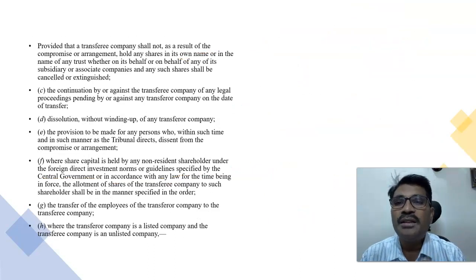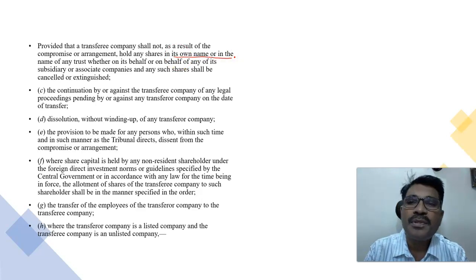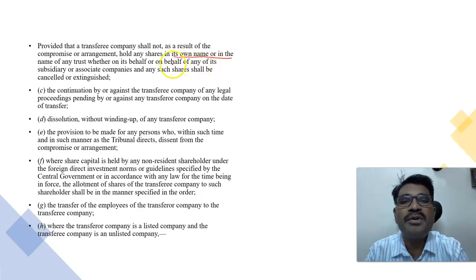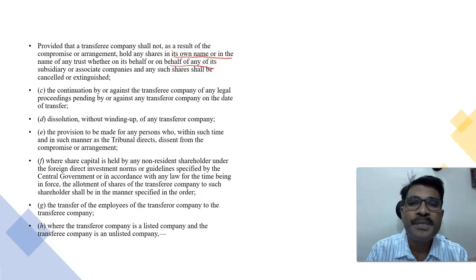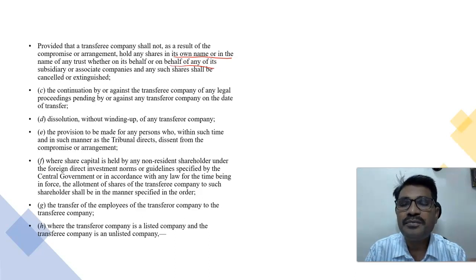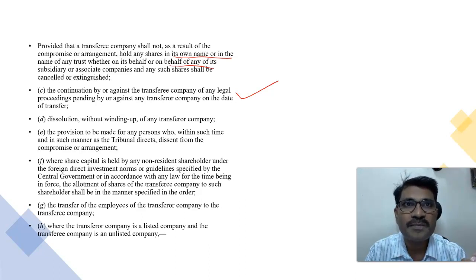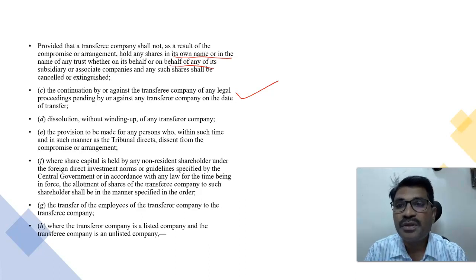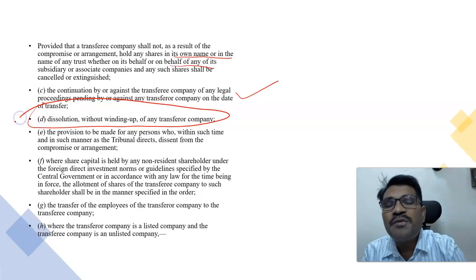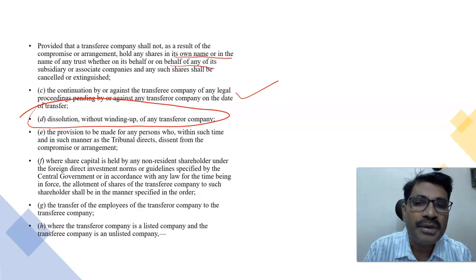A proviso states that the transferor company shall not, as a result of a compromise or arrangement, hold any shares in its own name or in the name of any trust on its behalf or on behalf of any subsidiary or associated companies, and such shares shall be cancelled or extinguished. Point (c): continuation of legal proceedings pending by or against any transferor company on the date of transfer — the court decides whether proceedings transfer to another company or continue.